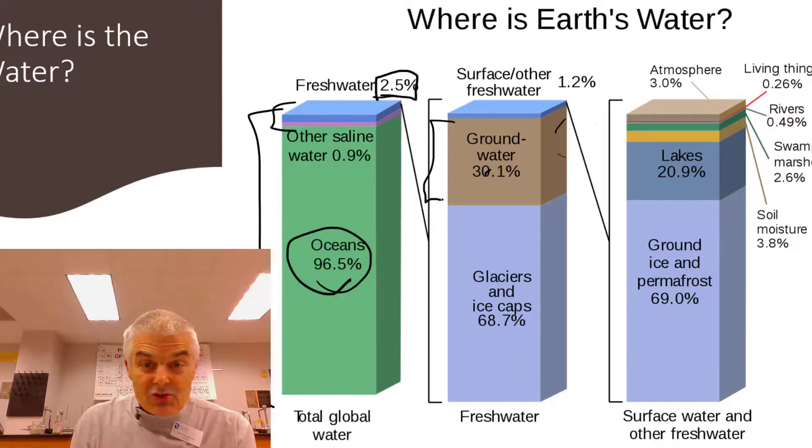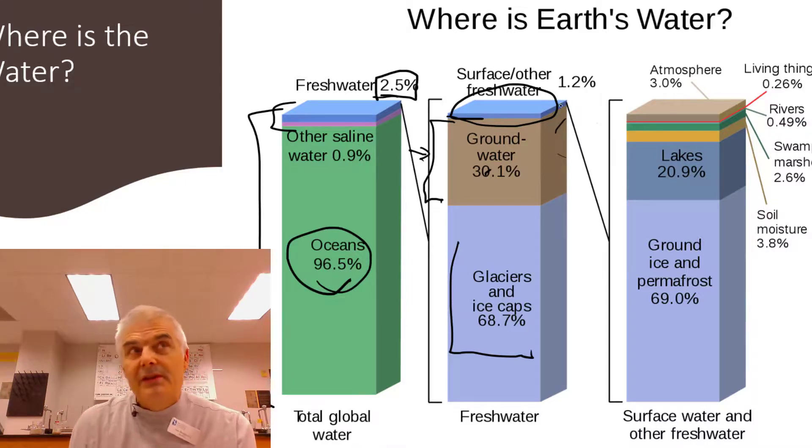Now, if we take that 2.5%, where is that water? 30% is groundwater. Then glaciers and ice caps, 68.7%. So what we mostly think - this is weird, right? - what we most think about as fresh water is lakes and rivers and streams. Look how little percentage that is. It's only 1.2% of all of the fresh water on earth.